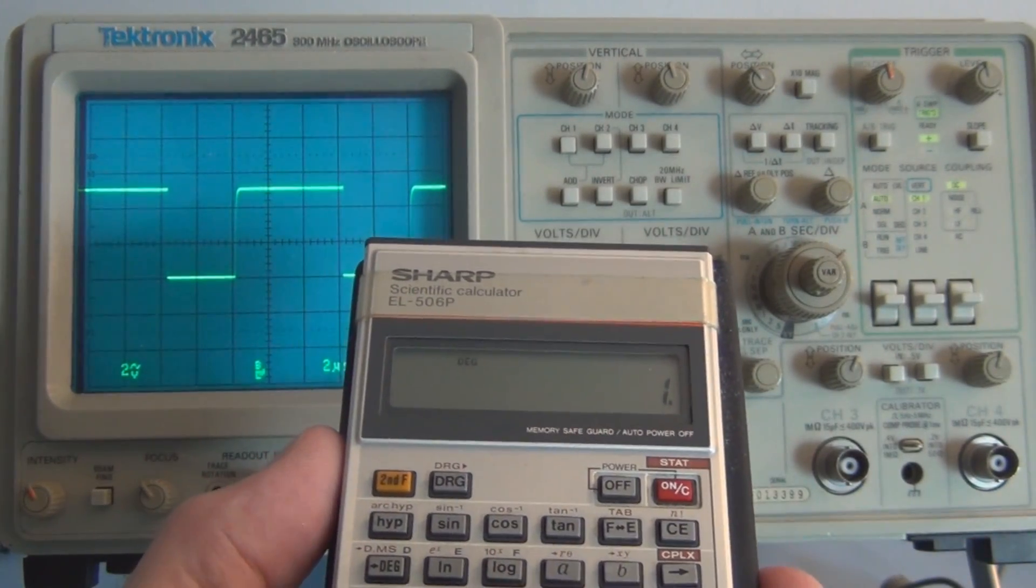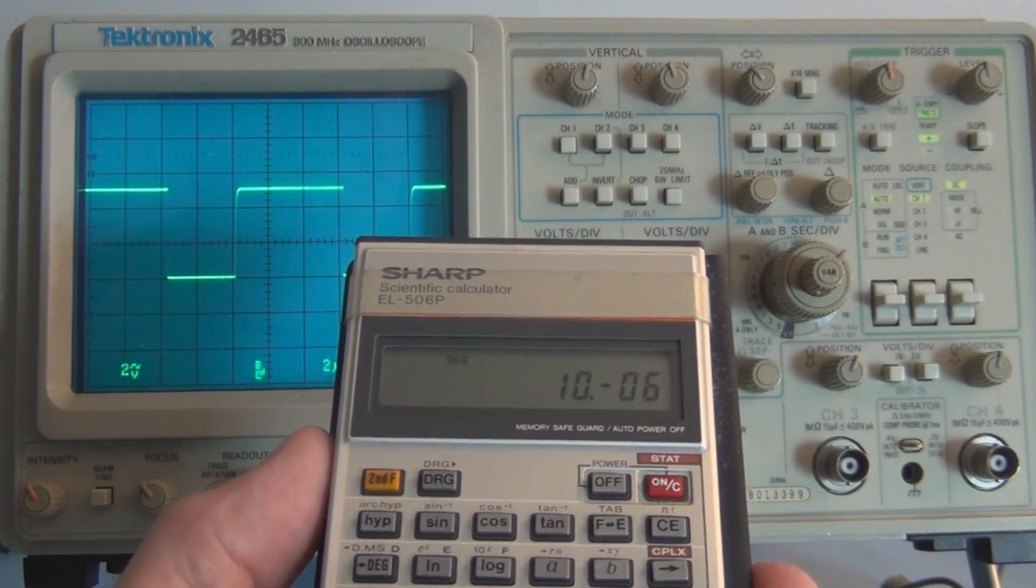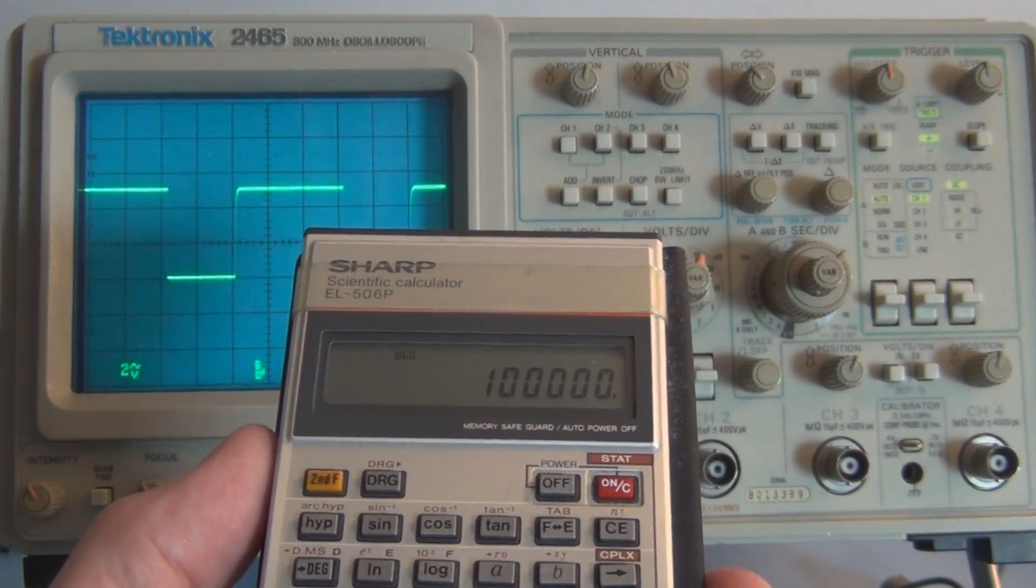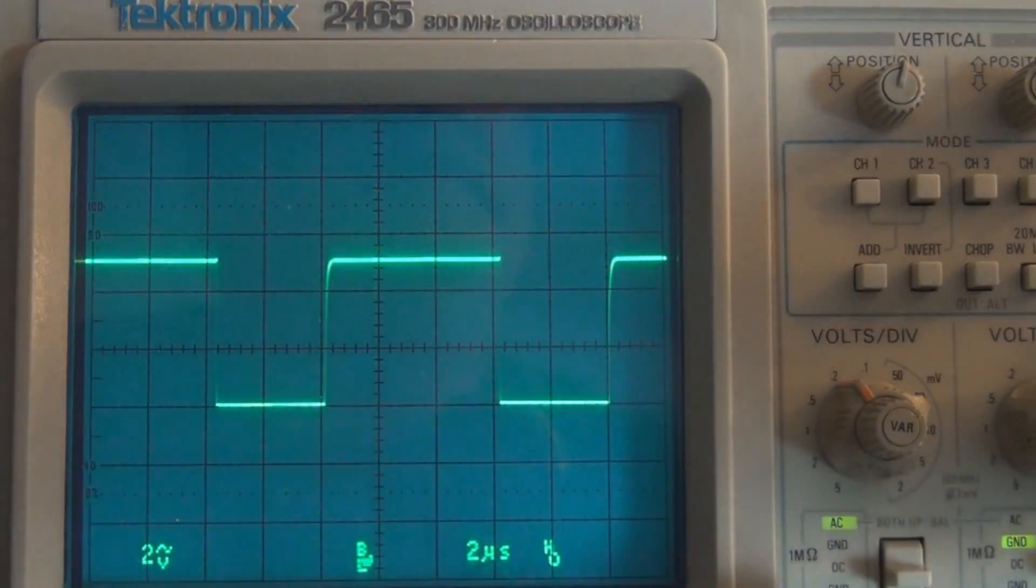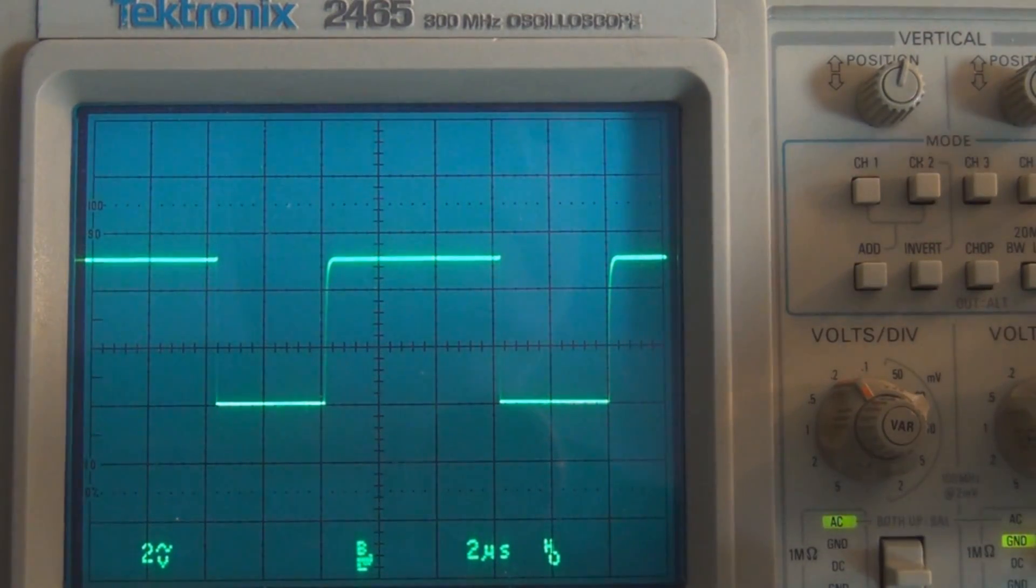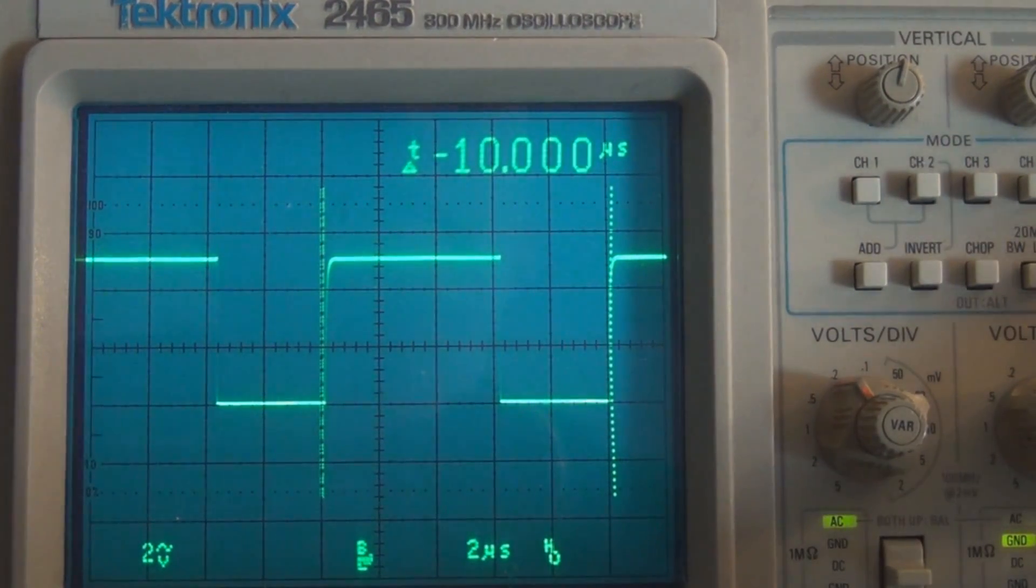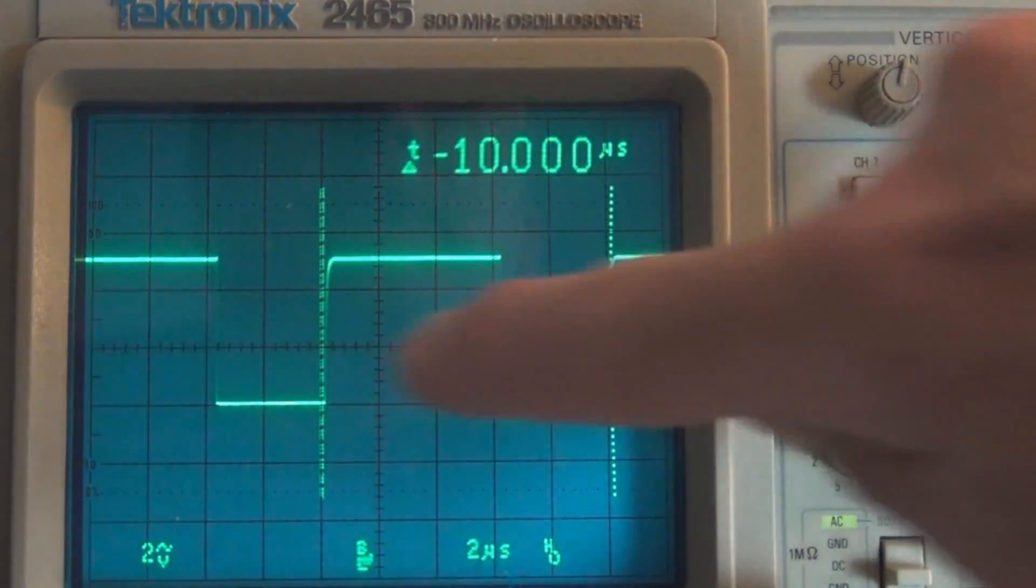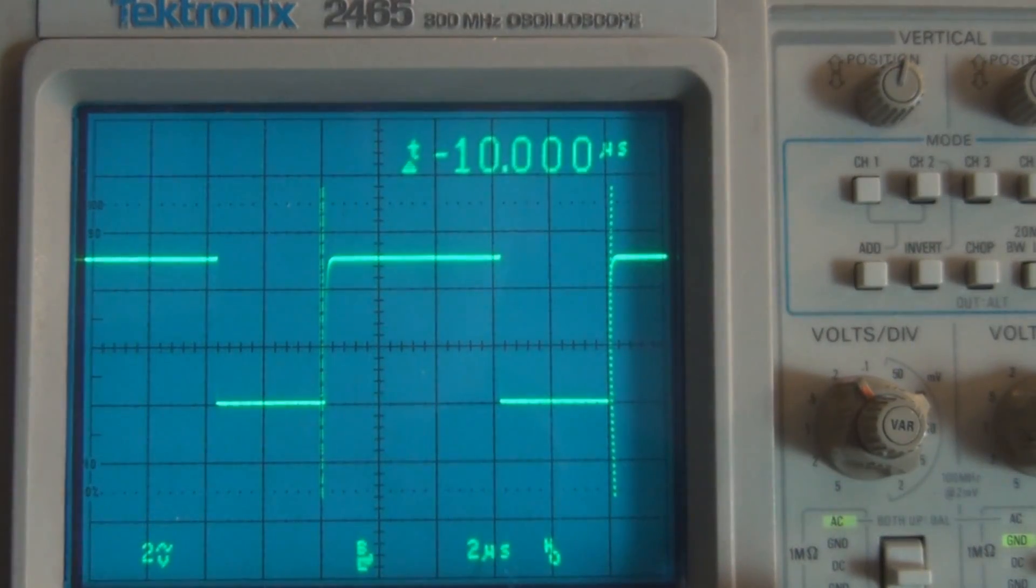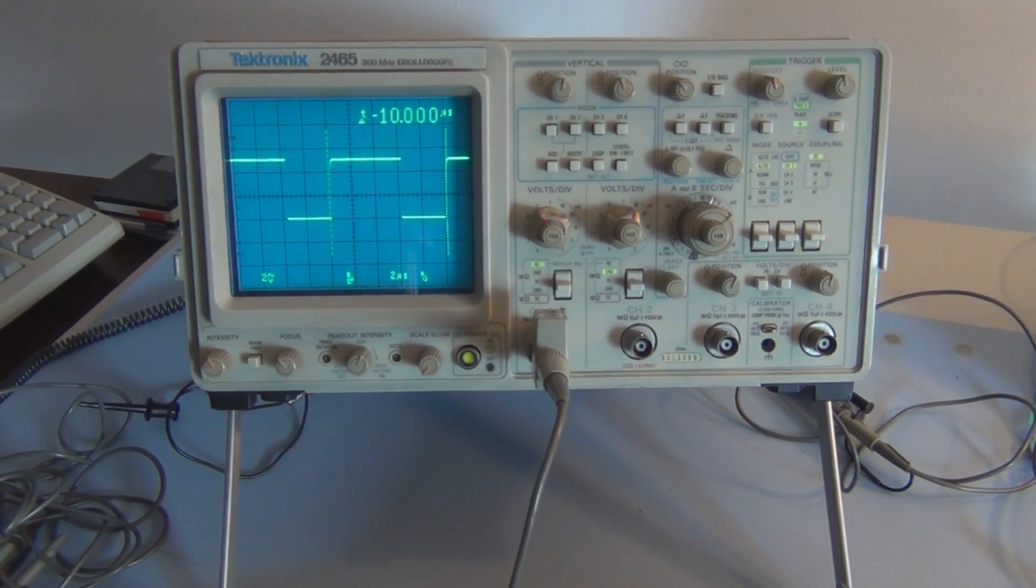1 divided by 10 to the 6 minus is equal to 100 kilohertz. We also have a feature here where we can measure a period on the waveform here. Delta T, you can see there from the rising edge to the rising edge we've got 10 microseconds.